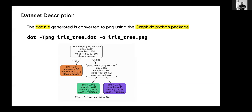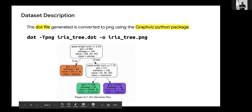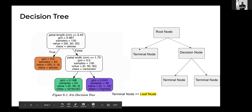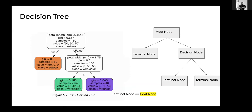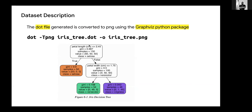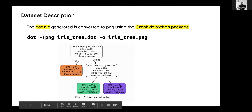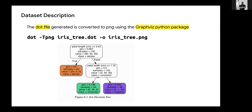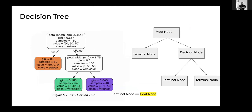This is a decision node because from this node we are getting two other nodes. The root node is at the top; terminal nodes have no children, and decision nodes branch further. If the petal length is less than or equal to 2.45, then the class is Setosa. We have three classes: Setosa, Versicolor, and Virginica. If false, it comes to the next node, and if the width is also less than 1.75, it chooses between the two resulting nodes. Terminal nodes can also be referred to as leaf nodes.